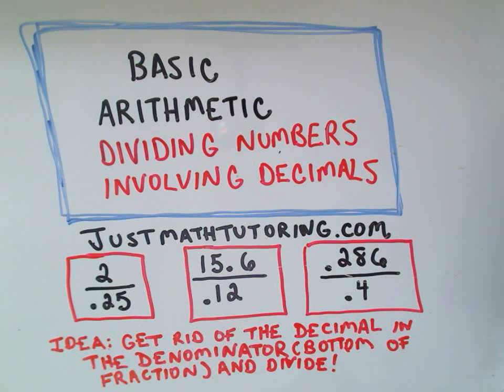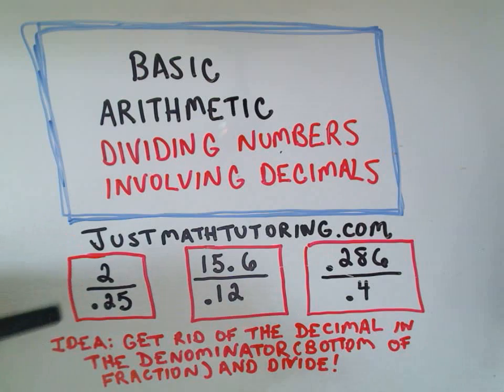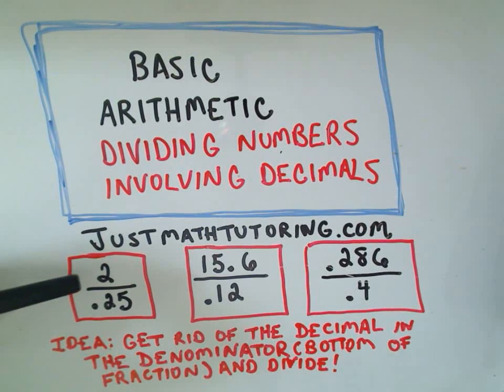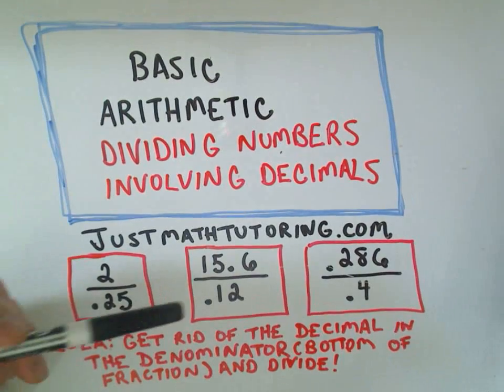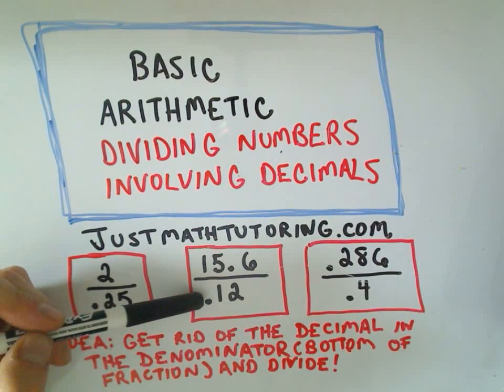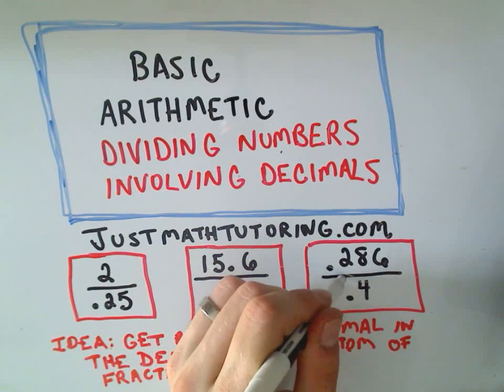In this video I want to talk about doing division where the numbers you're dividing have decimals in them. I've got three examples here. I'm going to take 2 and divide it by 0.25, take 15.6 and divide it by 0.12, and divide 0.286 by 0.4.